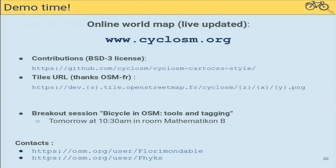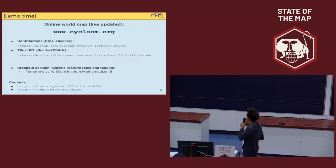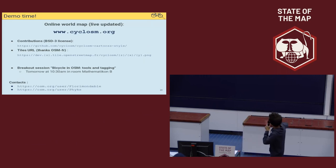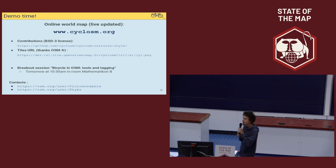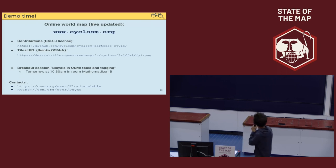Our big announcement today is that our style is available worldwide and is live-updated. This is done thanks to servers provided by the French OSM local chapter — many thanks to them. This is available at www.cycleosm.org. The style is available on GitHub; all the code is open source and free software available if you want to have a look and contribute.